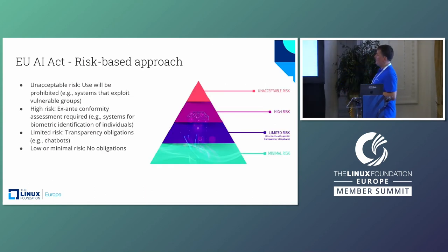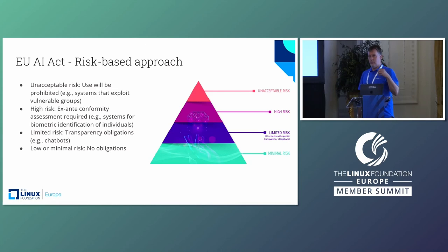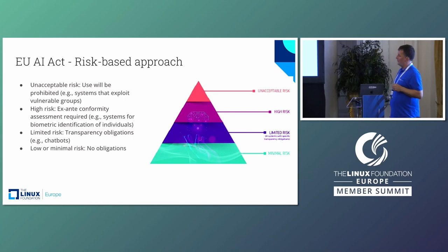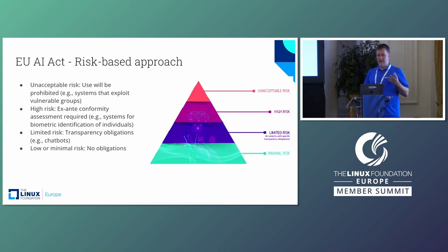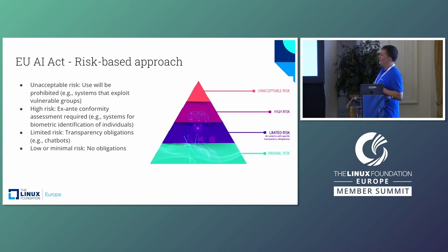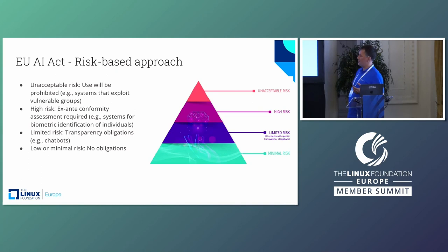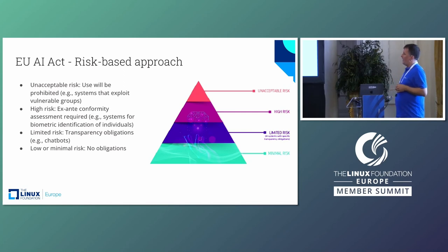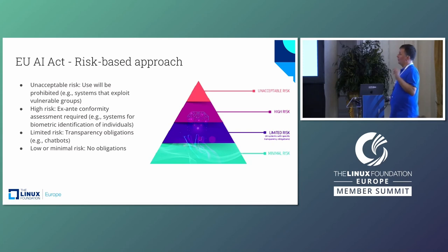The AI Act applies a risk-based approach based on application — it doesn't look at what the technology looks like, it says what is it going to be used for. It begins with low and minimal risk: there are no obligations if you run an AI system that has no way of harming anybody or violating human rights. Limited risk brings transparency obligations — you need to disclose details about what data you collect; an example would be a chatbot. High-risk applications require an ex-ante — that means before it's made available — conformity assessment. An example would be systems for biometric identification of individuals.